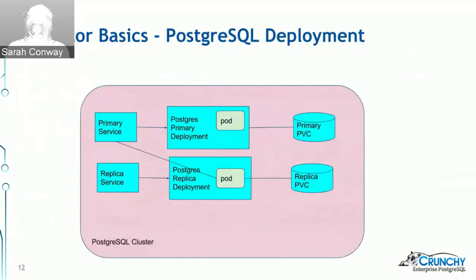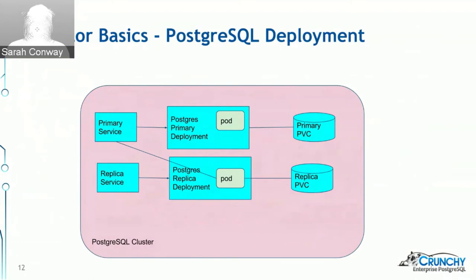There are six different objects that the operator considers to define a Postgres cluster, and these are all created with just one command. In Postgres you can have a primary database alongside a series of read-only replica databases in a replicated state, with services out in front of those databases, related persistent volume claims, and more. One of the key values of the operator is that it treats all these components as just one cluster — it simplifies Postgres clustering mechanics. Without the operator you'd have to construct and deploy all of these things in pieces by hand.